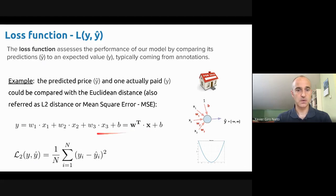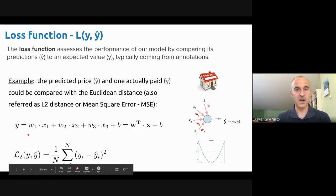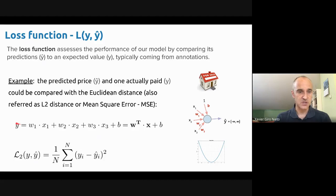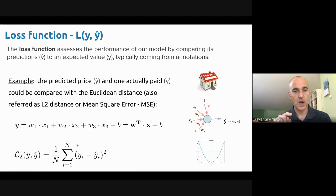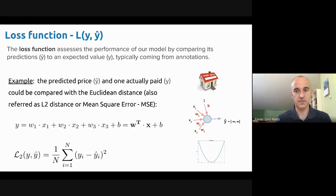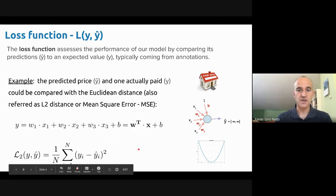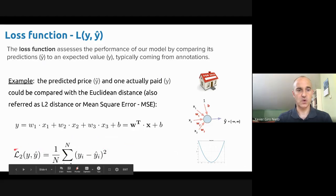If we have a linear regression, we'll be solving this equation. If we want to compare the predicted values with the ground truth, we could use the L2 loss. What it does is, for each component of the vector y, it computes the subtraction squared, adds all the values, and averages by n, where n is the dimension of the vector. If you plot the curve of this loss with respect to the error, this is the kind of shape you will get with an L2 loss.